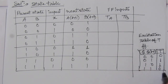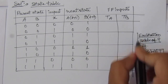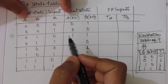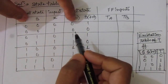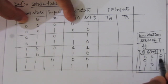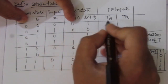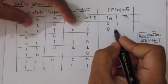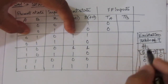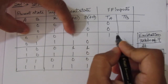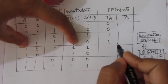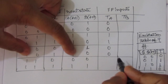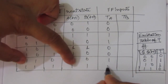We use this excitation table to find TA and TB values. For TA, we look at the A column and A(T+1) column. For transitions 0→0 we get TA=0, 0→0 again gives 0, 0→1 gives 1, 0→1 gives 1, 1→1 gives 0, 1→1 gives 0, 1→1 gives 0, and 1→0 gives 1.